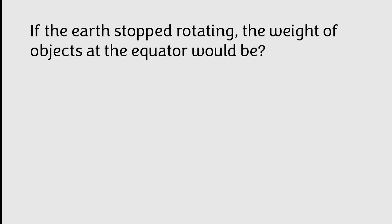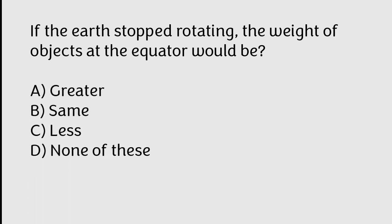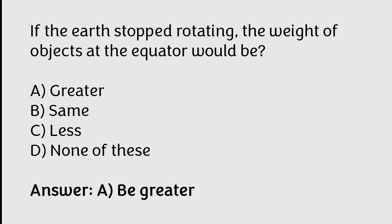If the Earth stopped rotating, the weight of objects at the equator would be: greater, same, less, none of these. The correct answer is Option A. If the Earth stopped rotating, the weight of objects at the equator would be greater.